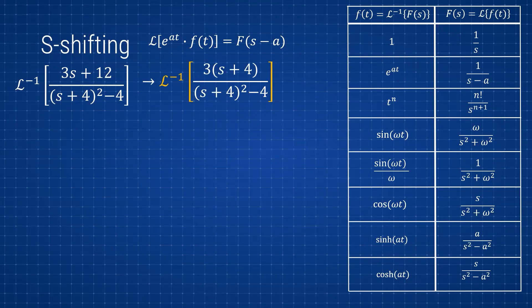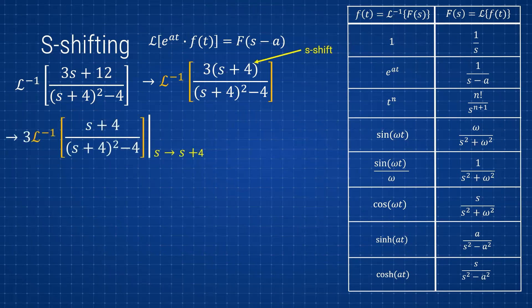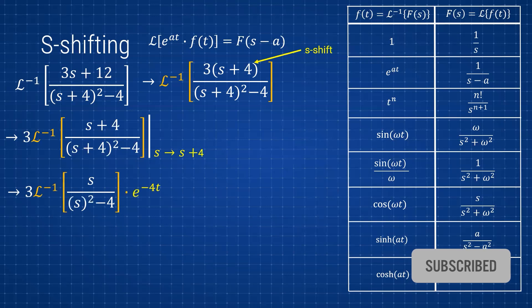On the numerator we have 3s+12. If we factor out 3 we get 3(s+4), so we have (s+4) on both top and bottom — but don't cancel them, since the denominator also has the −4 term. You can see we have a shifted form on top and bottom, which tells us we have an s-shift. We factor out the 3, rewrite everything in terms of (s+4), and recognize that going backwards the s-shift corresponds to an exponential in the t-domain — in this case e^(−4t).